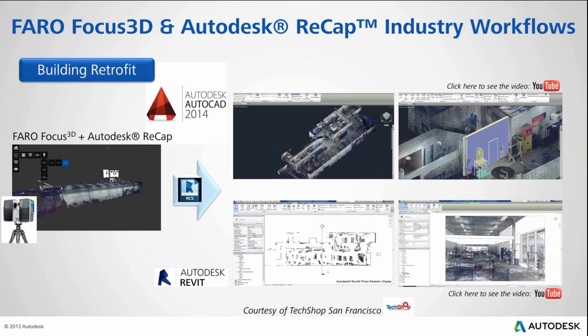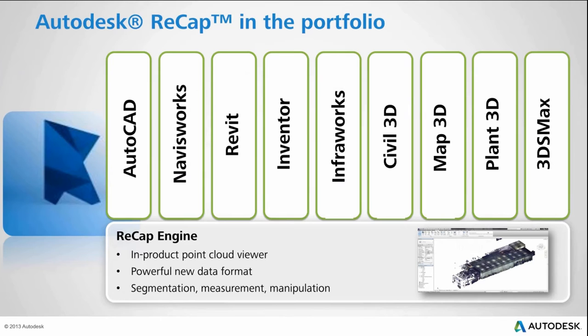That whole process goes into a workflow we call the building retrofit: taking scans, getting an as-built document, sharing that data out, and then using that data inside products like Revit and AutoCAD for new layout and conceptual design. The Hero products that support the point cloud data ReCap produces directly are: AutoCAD, Navisworks, Revit, Inventor, InfraWorks, Civil 3D, Map 3D, Plant 3D, and 3DS Max.